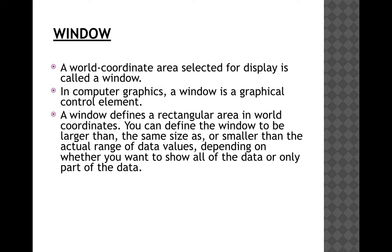Now, what is windowing? To perform a viewing transformation, we select a finite world coordinate area for display, which is called a window. In computer graphics, a window is a graphical control element — it is a rectangular area in world coordinates.